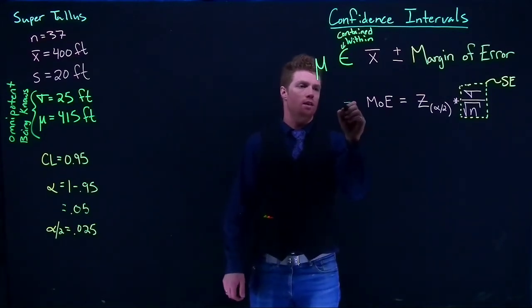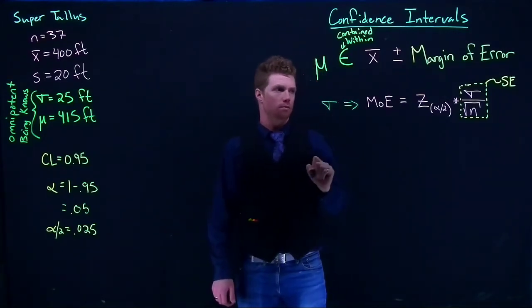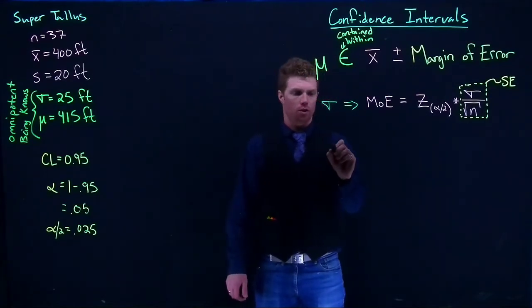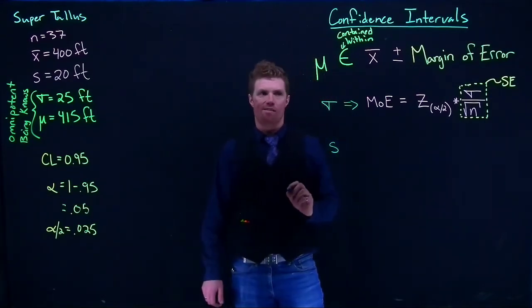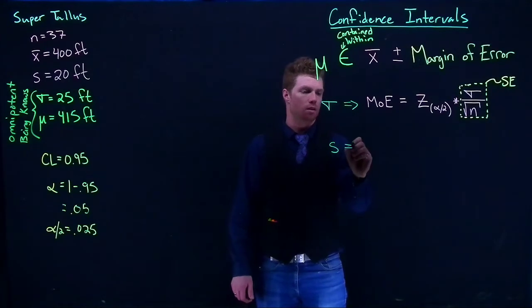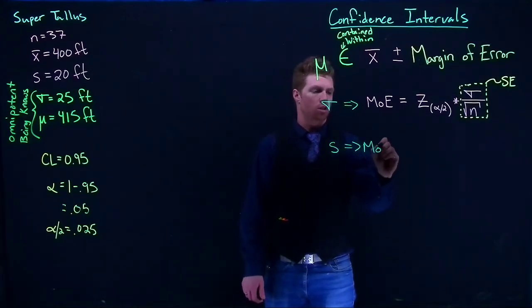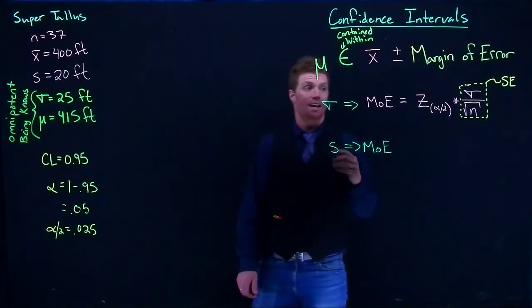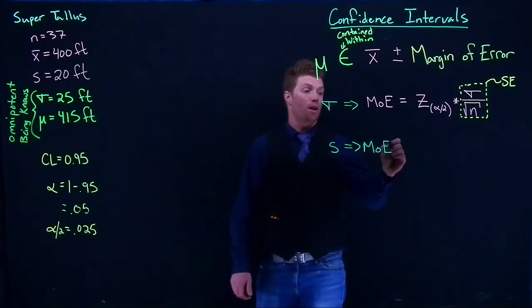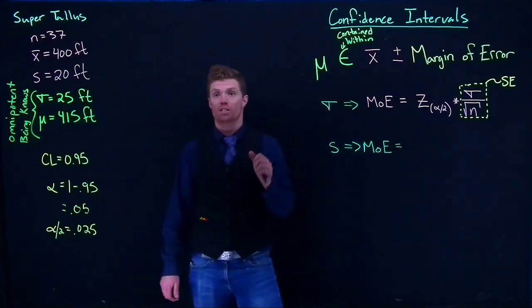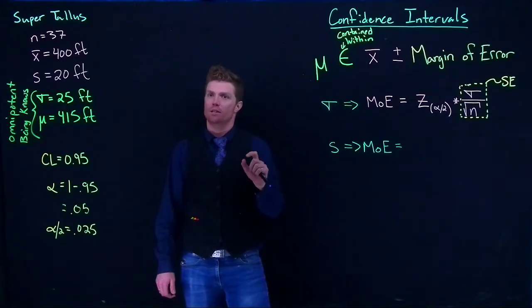So this is if we have sigma. And what we're going to do now is what happens if we only have S? How do we calculate our margin of error? The nice thing is we can still do it, but what changes is we actually have to use a slightly different distribution.